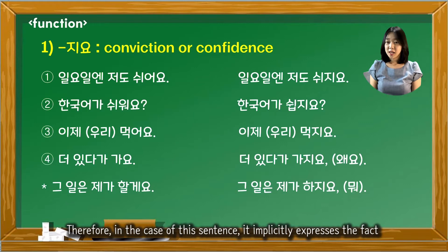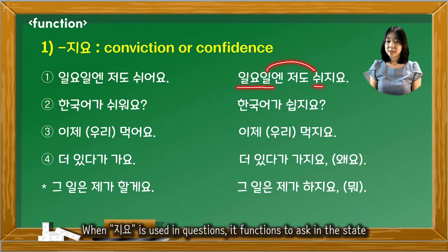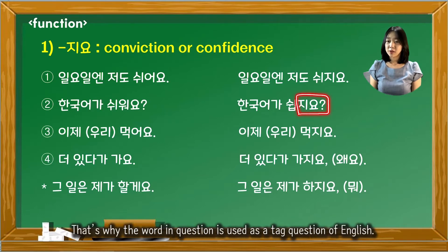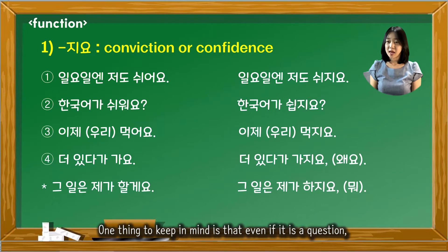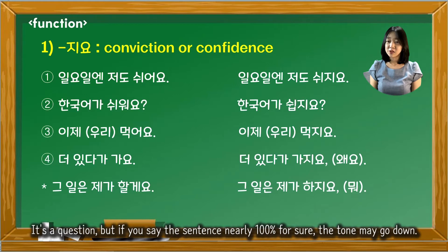Therefore, in the case of this sentence, it implicitly expresses the fact that most people get out of work and rest on Sundays. When 지요 is used in questions, it functions to ask while being sure of what you know or think — that's why it is used as a tag question in English. In fact, Korean people use 지요 in this function the most. One thing to keep in mind is that even if it is a question, it does not always raise the tone at the end. If the sentence is nearly 100% certain, the tone may go down, like 한국어가 쉽지요.